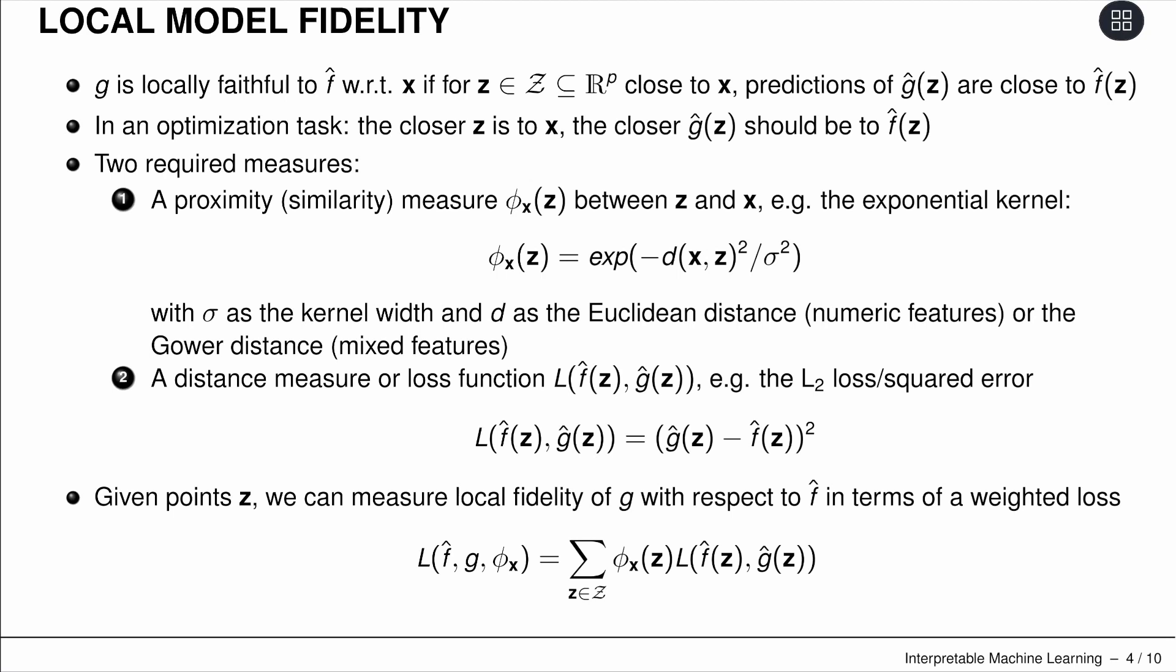Given these points z, we can measure the local fidelity of a model with respect to F hat in terms of weighted loss. We have the distance from x to z as the weight. If we are further away, we don't really care if the predictions don't agree. If they're very close to each other, the loss should be very small. We sum over different z.